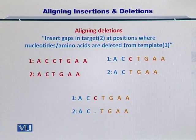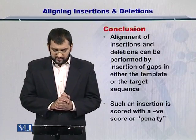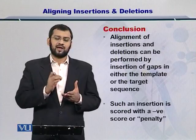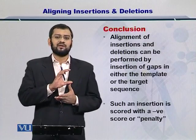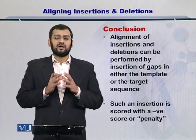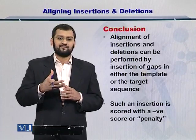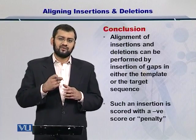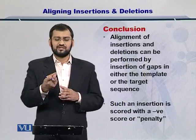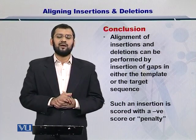In this way, we can handle insertions and deletions while comparing two sequences. In conclusion, the alignment of insertions and deletions can be handled by insertion of a gap within the target or the template depending upon whether it is an insertion or deletion. Such a negative event needs to be handled with a penalty because the two sequences are different. As a result of insertion or deletion, we give it a negative score, which is typically called a penalty.